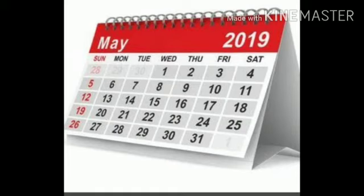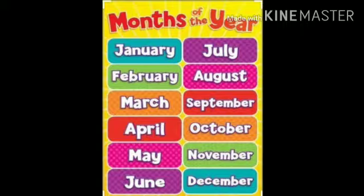Kalki class mein I have introduced you with a calendar. Calendar is the timetable for the whole year, jis mein aap months, days and dates — ye teeno chize dek sakte hai. I have told you that there are 12 months of the year. Pore saal mein baara mahinye hote hain.